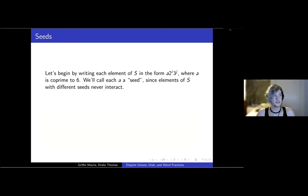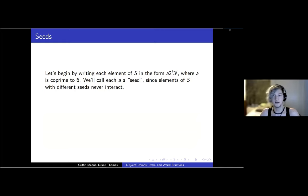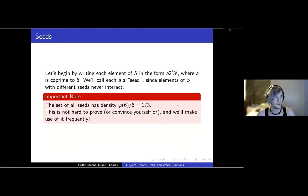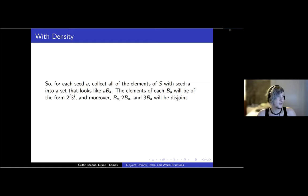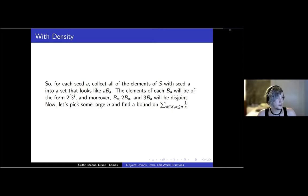We write each element of S in the form a × 2^i × 3^j where a is coprime to 6, and call each a a seed. The disjointness condition only interacts within each seed. The set of all seeds has density one-third. For each seed a, collect all elements of S with that seed into a set a × B_a, where B_a is the set of all 2^i × 3^j parts. B_a, 2B_a, and 3B_a are disjoint. We pick some large n and find a bound on the inverse sum of elements of S up to n.